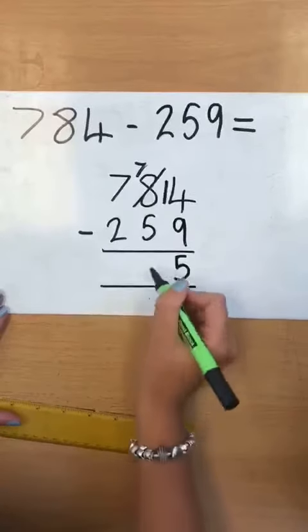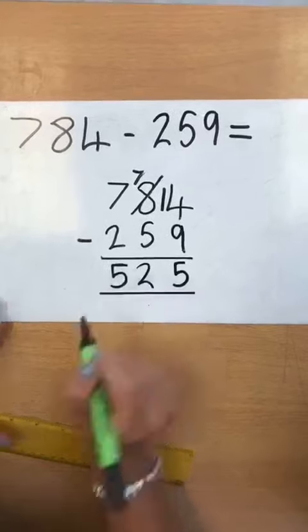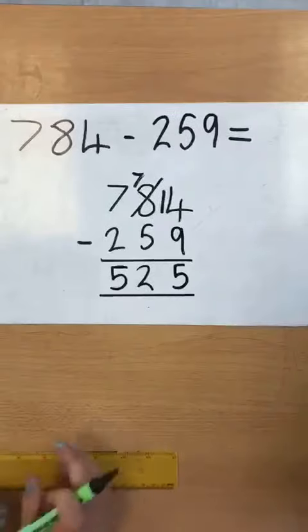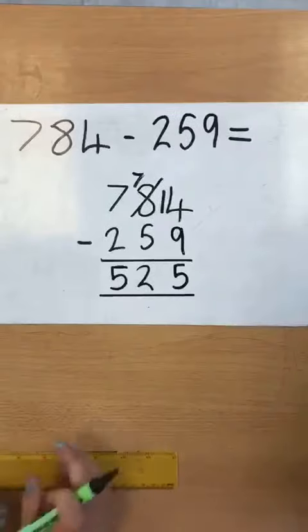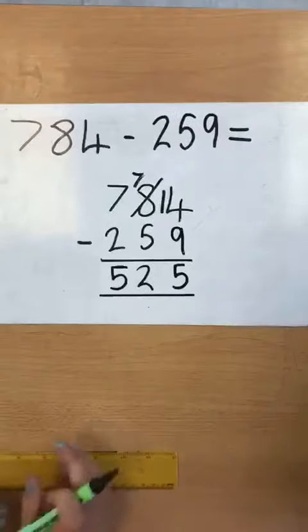We're subtracting the units, which is 4, subtract 9, but they can't do that because that would lead into a minus number. So what we need to do is take a 10 from here, which would leave you with 7 tens, and you move your 10 units across, which would make 14. We then do 14 subtract 9, which is 5.